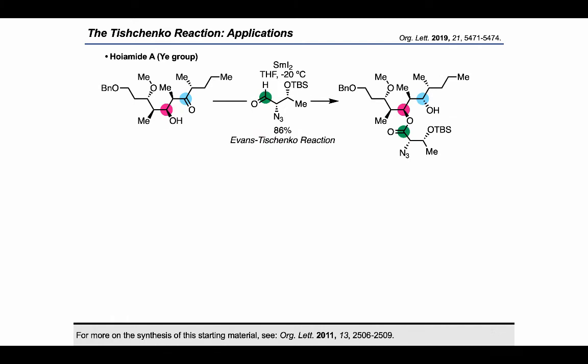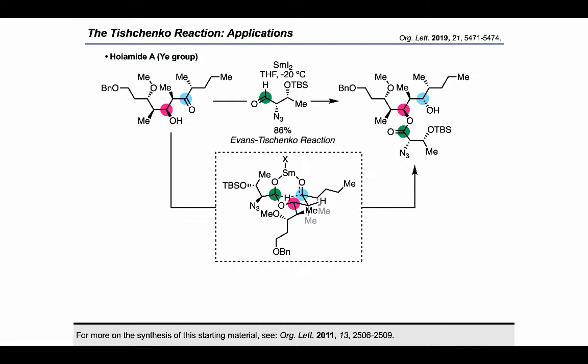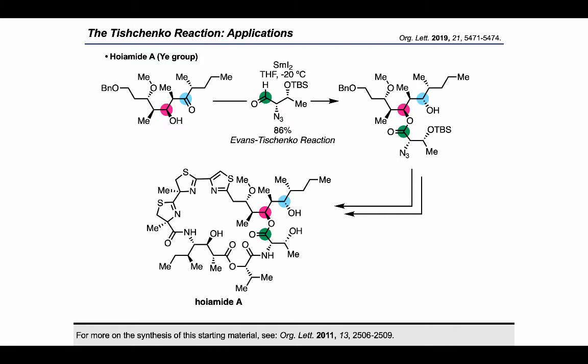Our next example comes from the E group, who showed that a beta-hydroxy ketone starting material could be used in combination with an enal to carry out an Evans-Tyshenko reaction in the presence of samarium diiodide. As we've seen before, this process occurs by a bicyclic transition state where the hydride of the hemiacetal moiety is delivered to the ketone marked with a blue circle. This key transition state motif is something we see again and again and is very useful for explaining the stereochemical outcome of the reaction. The fragment installed through this transformation was crucial to the structural elaboration that allowed the construction of the macrocycle present in the final target, Hoyamid A.